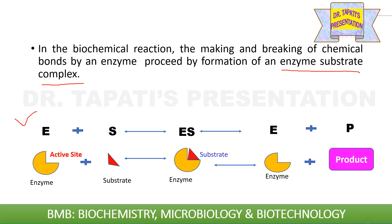In a biochemical reaction, the making and breaking of chemical bonds by an enzyme proceed by formation of an enzyme-substrate complex. This is a schematic diagram for an enzymatic reaction where E stands for enzyme and S stands for substrate. First of all, enzyme-substrate complex is formed. Substrate is bound to a specific region of the enzyme which is called the active site of the enzyme. After enzyme-substrate complex, product is formed. After completion of the reaction, product comes out of the active site region of the enzyme because shape and size of the product is completely different from the shape of the active site of the enzyme.